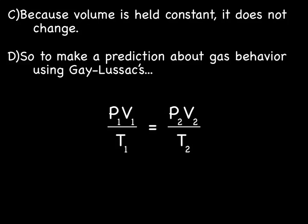Because the volume is held constant, it does not change. So when making a prediction about gas behavior using Gay-Lussac's Law, we're going to use the exact same equation: P1V1 over T1 equals P2V2 over T2. But this time we get to ignore volume.